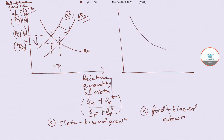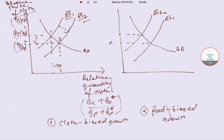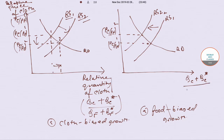For food biased growth, the diagram shows a relative demand curve and two relative supply curves — RS1 and RS2. The axes are: horizontal axis showing QC plus QC-star divided by QF plus QF-star, and the vertical axis showing PC/PF. The RS curve shifts, with PC/PF moving from level 1 to level 2.